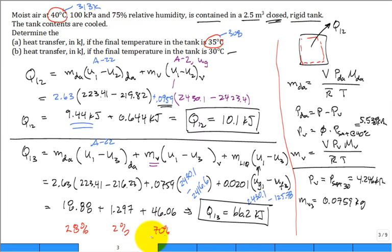The three heat contributions sum to Q1→3 ≈ 66 kJ: 18.88 kJ to cool the dry air (~28%), 1.297 kJ to cool the remaining vapor (~2%), and 46.06 kJ for the vapor that condensed (~70%). When cooling moist air with condensation, a huge fraction of heat removal is due to the phase change. From practical experience, running AC in humid Houston requires a lot of work — you can see condensate dripping outside. In dry cities like El Paso or Albuquerque, no condensate forms on the coil and it's much cheaper to run.